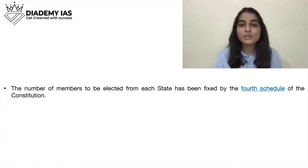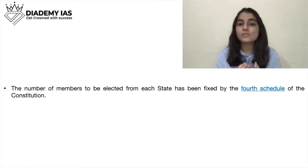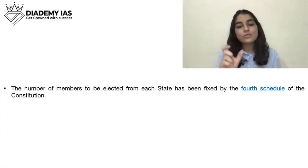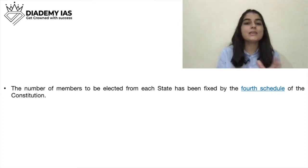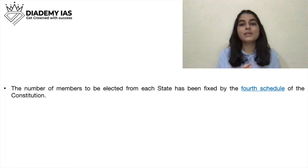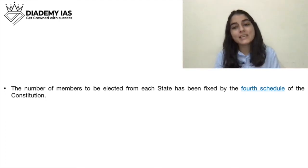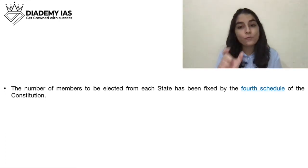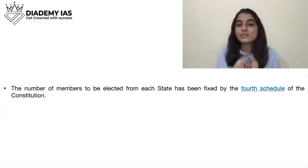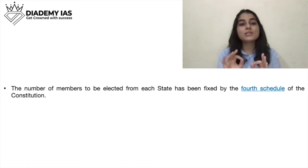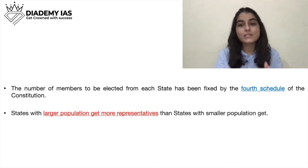The number of members to be elected from each state has been fixed by the Fourth Schedule of the Constitution. Our Constitution has 12 schedules. The Fourth Schedule mentions how many seats each state has in the Rajya Sabha. Please remember this — many times a direct question is asked about the Fourth Schedule.